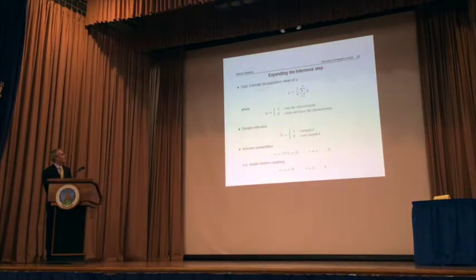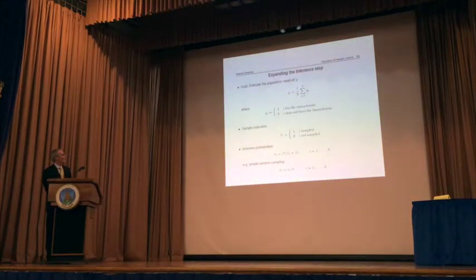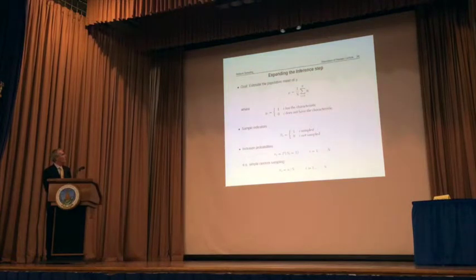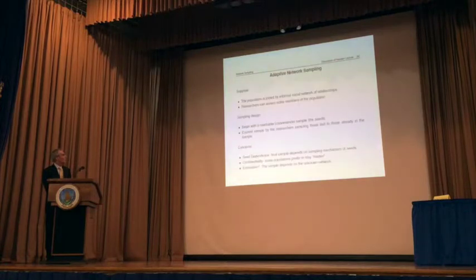To do inference, if we have a population quantity U — say the average of our outcome over the set of population units — the standard way is to set up sample indicators S_i and compute the inclusion probabilities π_i, the probability of sampling each unit. We then define the estimator using versions of the Horvitz-Thompson estimator or other versions to do the inference.